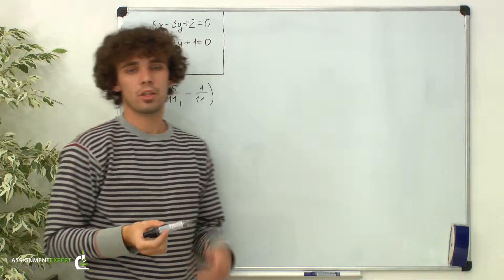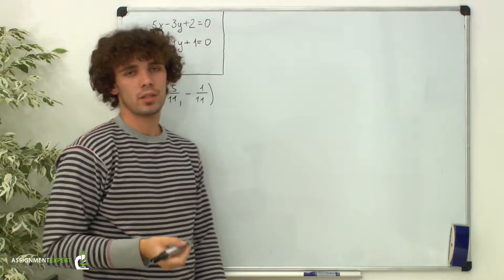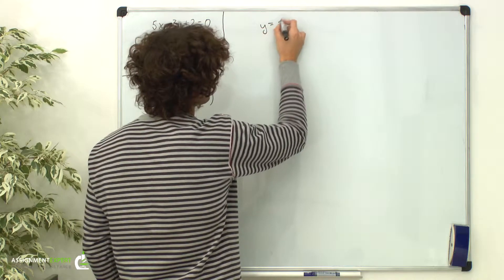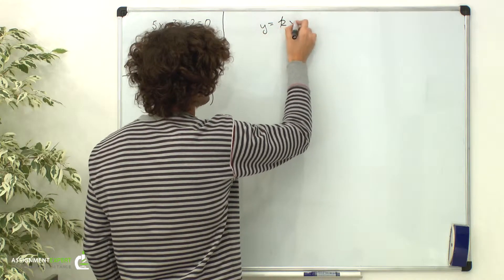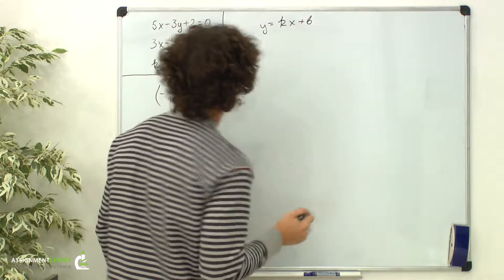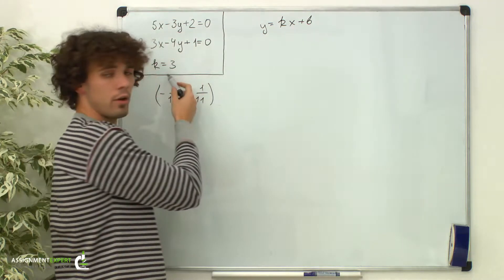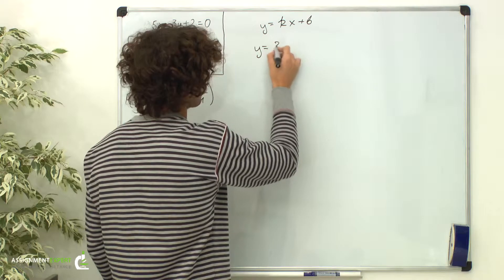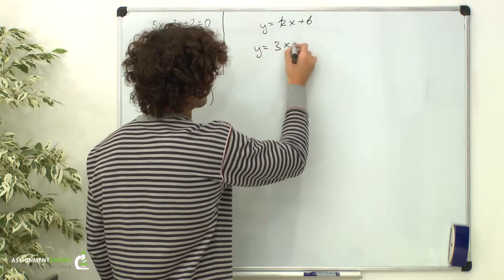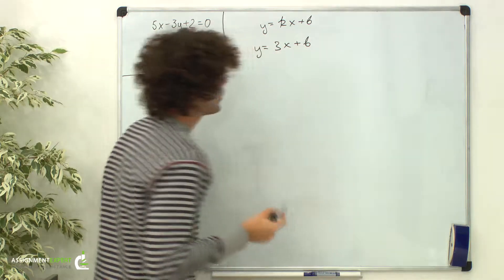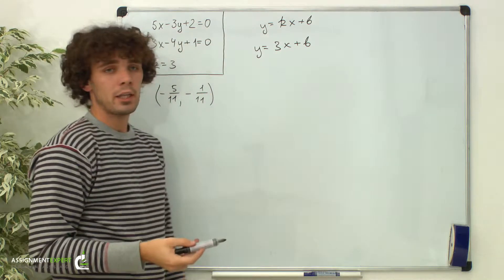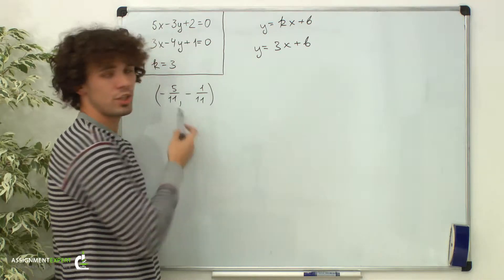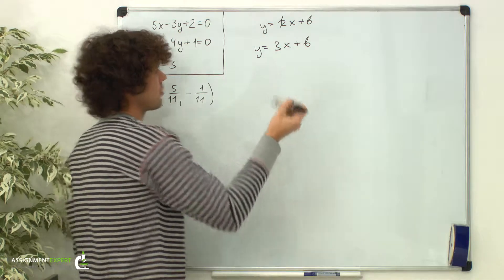Recall the general equation of the line in slope-intercept form: y equals kx plus b. We already know the slope, so we have y equals 3x plus b. To find b, let's insert the coordinates of the intersection point into this equation.